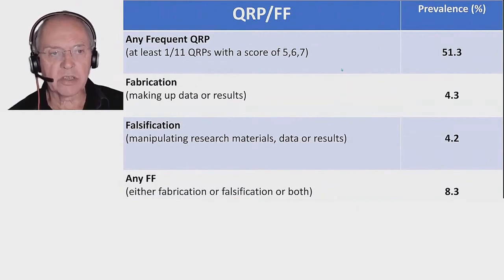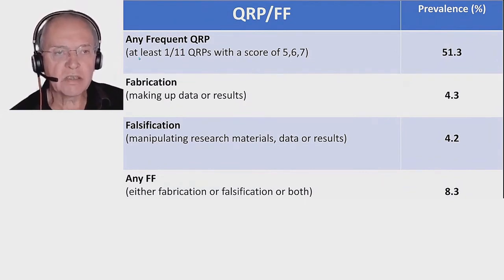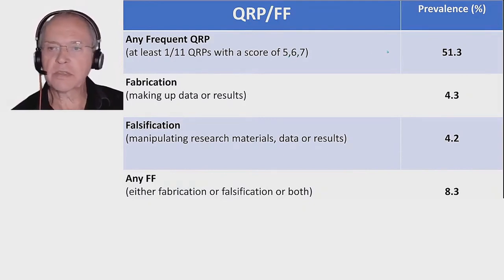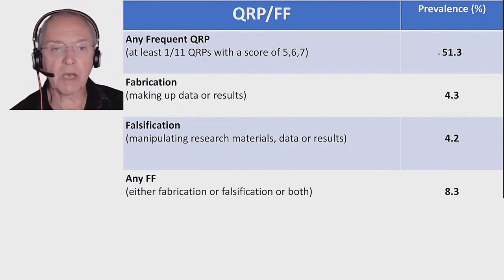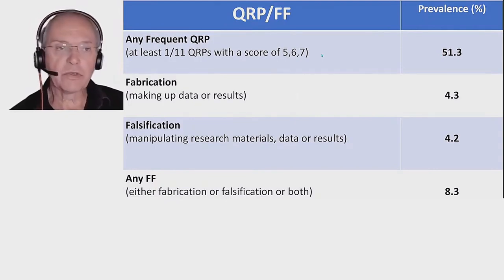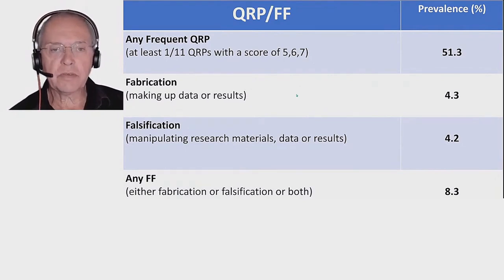When you lump that together — remember, we asked about 11 questionable research practices — and we say, what is the prevalence of having at least one of these 11 with a score of five, six, or seven, then we have about half of the respondents. And this shows what I said before: that questionable research practices might be rather prevalent, although you have to look at the 10 items to know what exactly this 50% refers to.